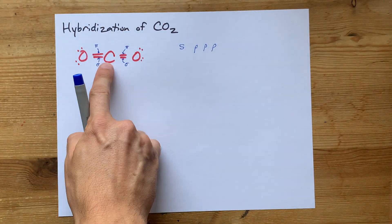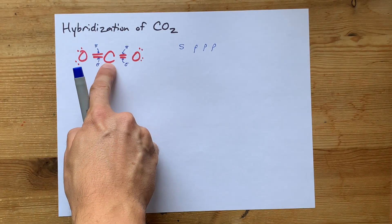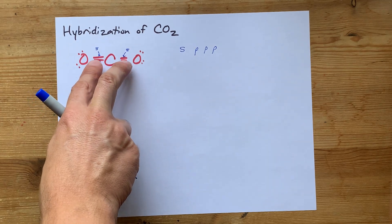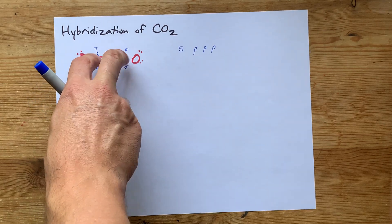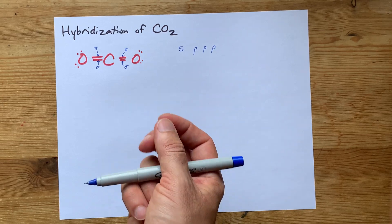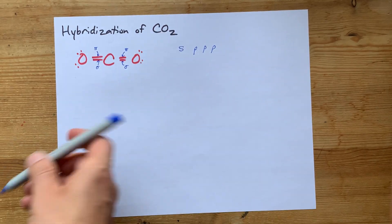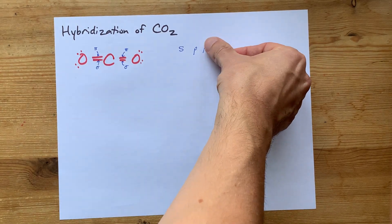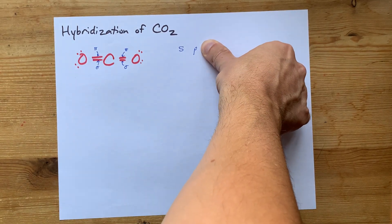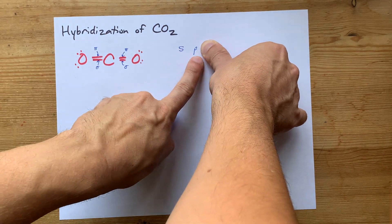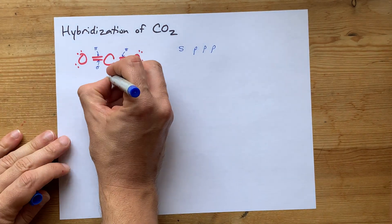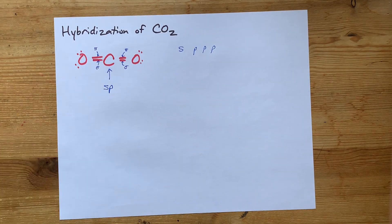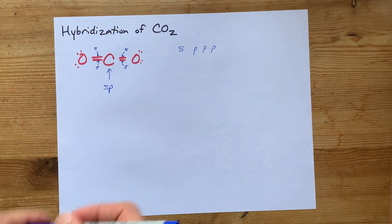Now, let's talk about carbon. This carbon needs two sigma bonds and two pi bonds. Pi bonds require P orbitals to be left over after hybridization. So, two pi bonds require two of the P orbitals, and we're left with an S and a P to hybridize. That carbon is SP hybridized.